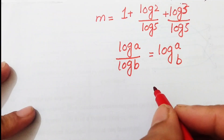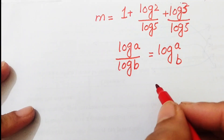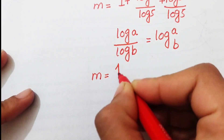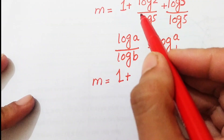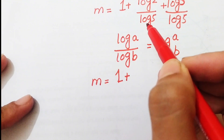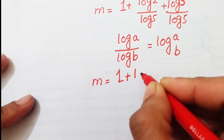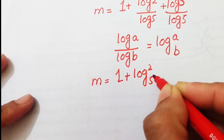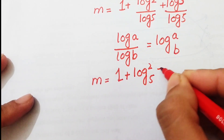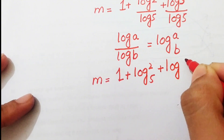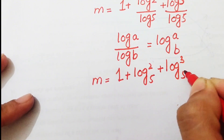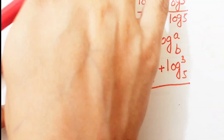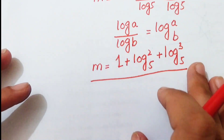Using the change of base property, log(a/b) can be written as log base b of a. So the final form becomes m equals 1 plus log₅2 plus log₅3. This is the value of m that we obtain.